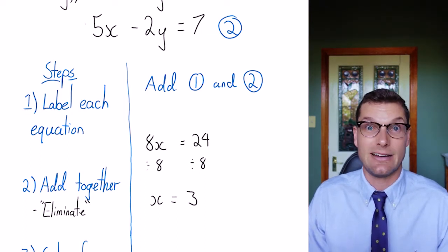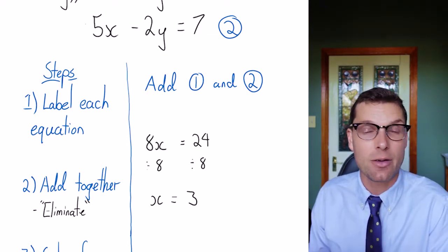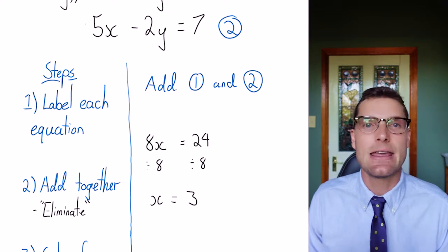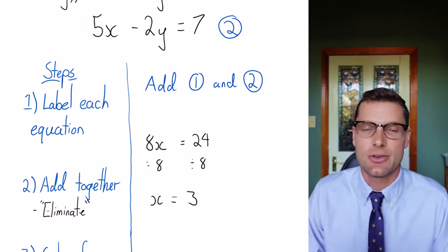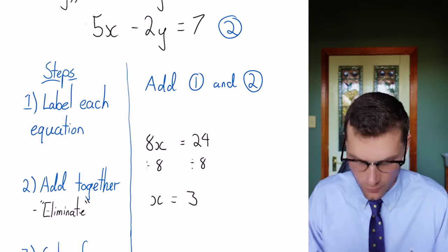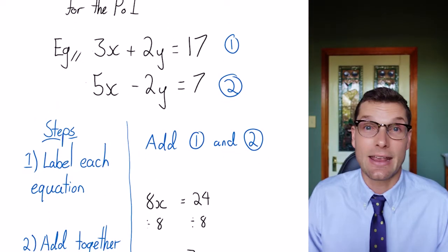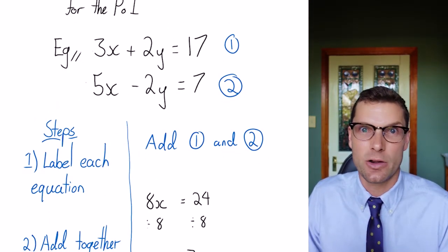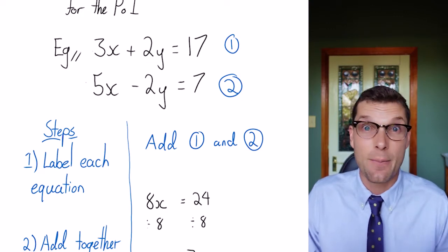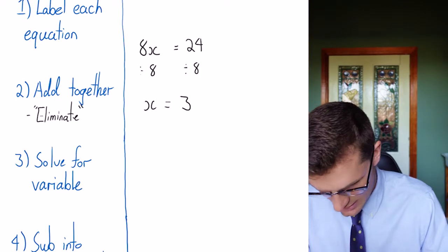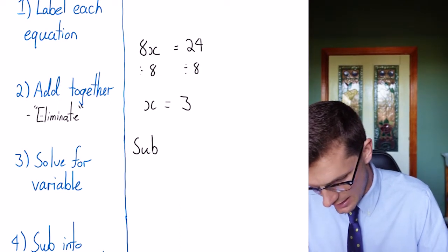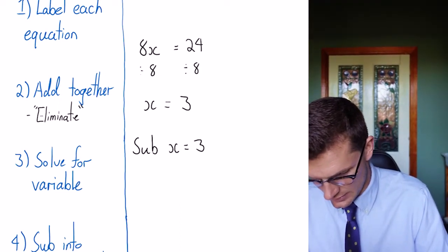That's totally great. Once I've got one variable, I can sub it back into either equation. Just pick the one with the least negatives. That's what I always do. And then I can solve for y. Again, you just have to tell your teacher what you're doing. So I'm going to sub x equals 3 into equation 1.